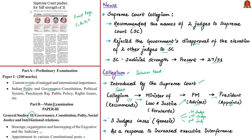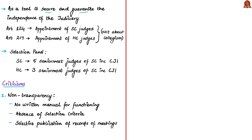The Collegium system was introduced because judicial appointments in the 1990s saw increased interference by the executives in power. The Collegium system was envisaged as a tool to secure and guarantee the independence of the judiciary. The Constitution has established an independent and integrated judiciary in India, and the independence of the judiciary forms a part of the basic structure of the Constitution of India. So the Collegium system is seen as a tool to guarantee this basic structure.